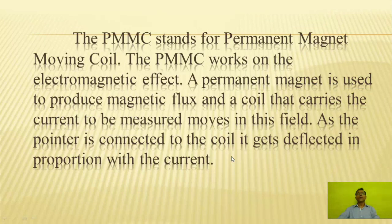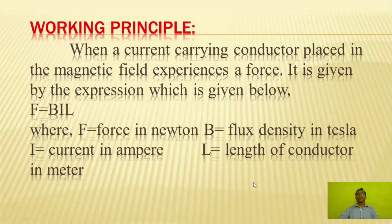PMMC stands for Permanent Magnet Moving Coil. The PMMC works on the electromagnetic effect. A permanent magnet is used to produce magnetic flux, and a coil that carries the current to be measured moves in this field. As the pointer is connected to the coil, it gets deflected in proportion with the current. The force on a current-carrying conductor in the magnetic field is given by the expression F = BIL, where F is force in Newton, B is flux density in Tesla, I is current in Ampere, and L is length of conductor in meter.